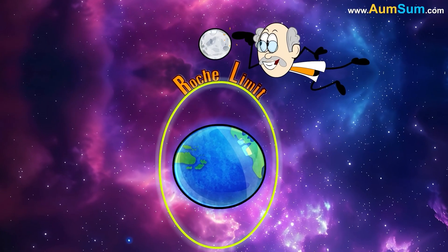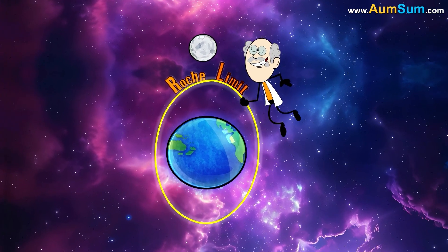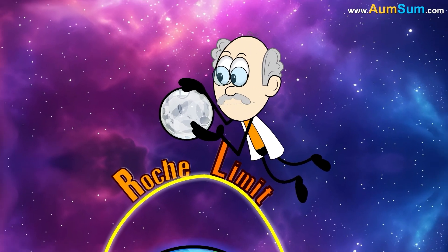Now, Earth also has a moon. But since it is beyond the Roche limit, it doesn't get ripped apart into pieces to form rings.